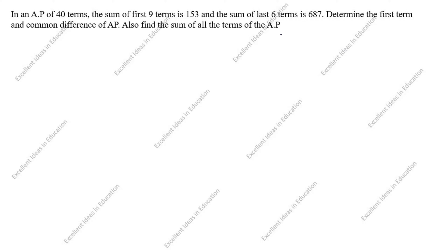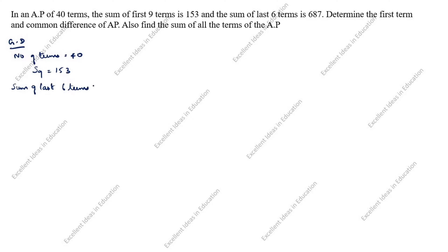Determine the first term and common difference of the AP, and also find the sum of all the terms of the AP. Given data: number of terms is 40, sum of first nine terms S9 is 153, sum of last six terms is 687. We need to find: first term (a), common difference (d), and sum of all 40 terms S40.